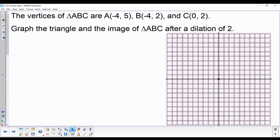So it says the vertices of triangle ABC are A(-4, 5), B(-4, 2), and C(0, 2). Graph the triangle and the image of triangle ABC after a dilation of 2. So the first thing we're going to do is graph the original triangle.